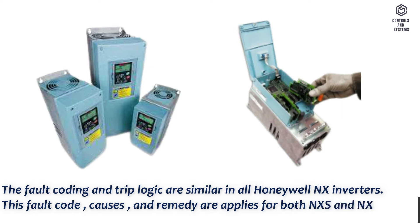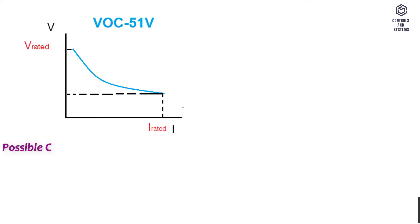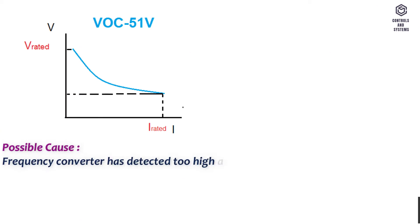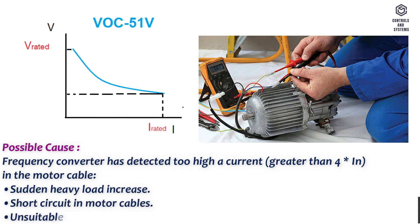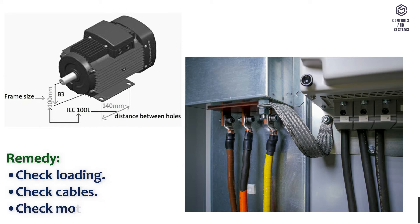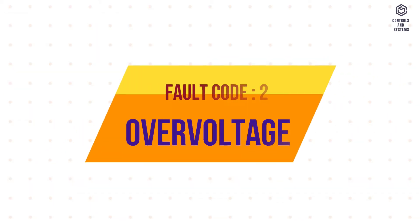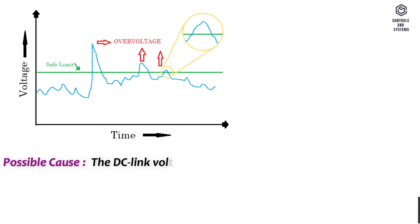Fault code 1 – Overcurrent. Possible cause: the frequency converter has detected too high a current, greater than 4 times the nominal, in the motor cable. Causes include sudden heavy load increase, short-circuiting motor cables, or unsuitable motor. Remedy: check loading, check cables, check motor size.